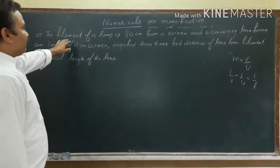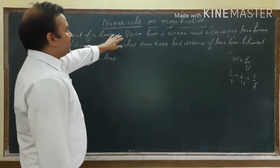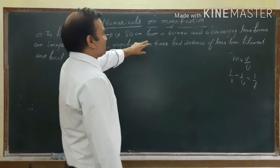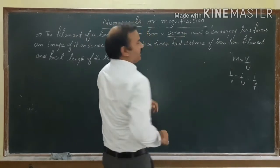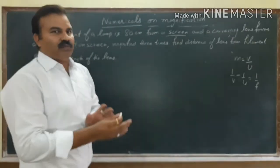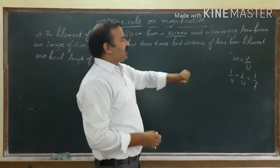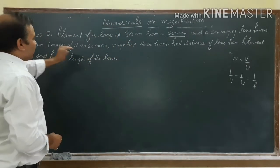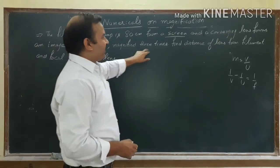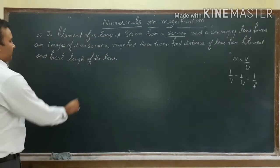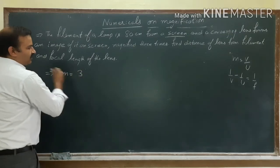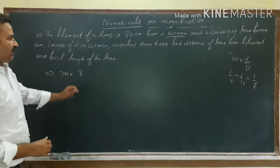Now the question says: the filament of a bulb is 80 cm from a screen. The word screen means where the image forms. A converging lens forms an image on the screen that is magnified 3 times. Magnified 3 times means magnification is 3.